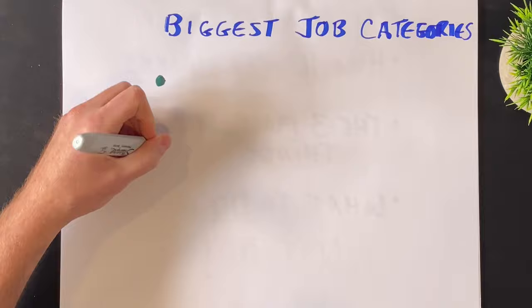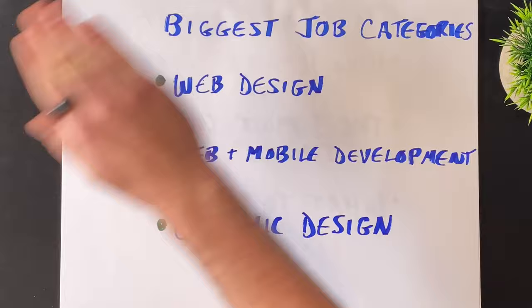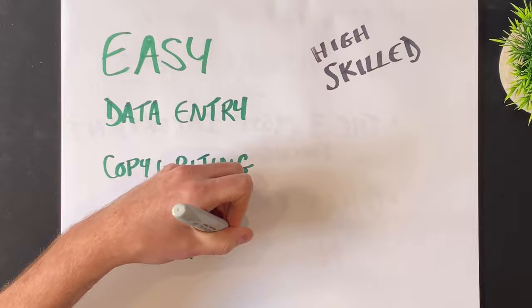Some of the biggest job categories on Upwork include web design, web and mobile development, and graphic design. There are also some job categories that are super easy for anyone to get started in, like data entry, copywriting, and virtual assistance. And some categories that are very specific, like artificial intelligence and machine learning, marketing automation, and mobile app development.